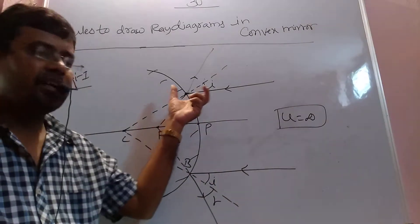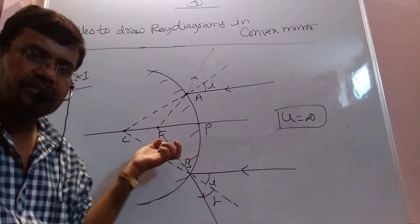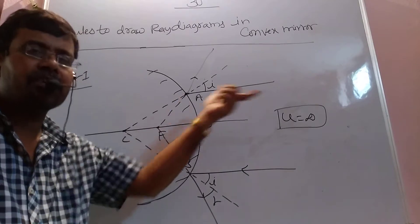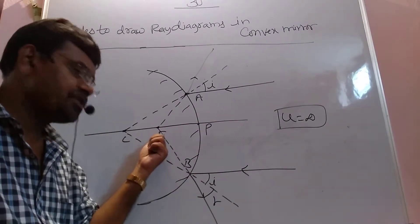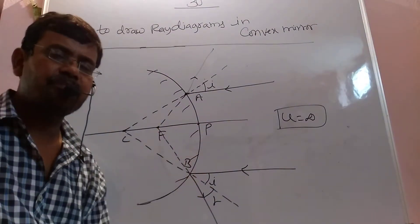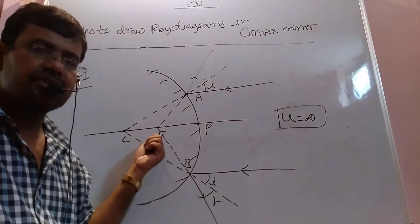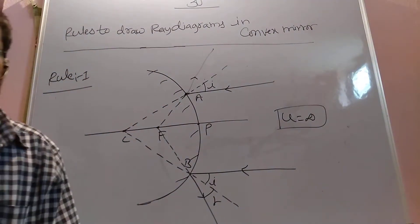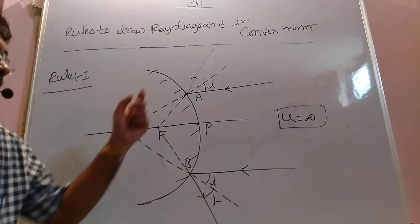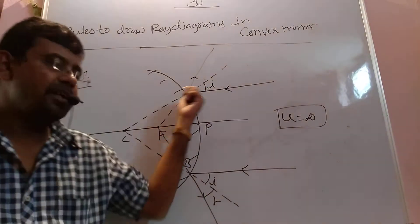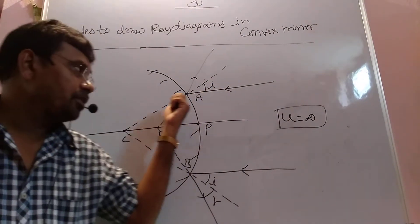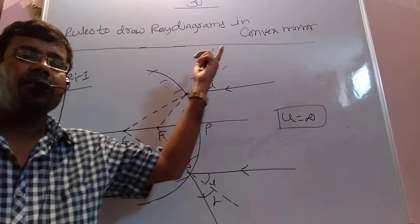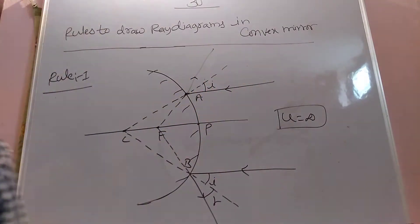So if any beam of light comes parallel to the principal axis, that beam of light diverges from one particular point on the principal axis — the focal point. The focal point is denoted with an arrow. So this is Rule 1: a parallel beam of light coming in has its reflected ray diverging from the focal point.